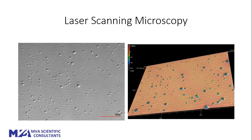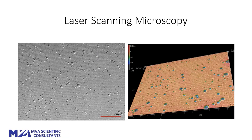This set of images shows two views from the laser scanning microscope. On the left, some features might look like bumps on the surface, but looking at the image on the right it becomes clear that those circular features are actually pits. You can see the depth based on the scale bar in the upper left of that second image — it looks like the pits are about 2.2 microns deep.